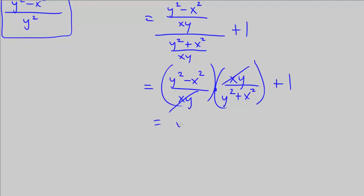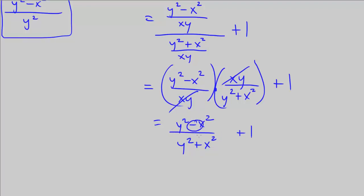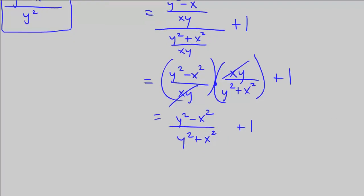And we are left with y squared minus x squared over y squared plus x squared, plus 1. Don't think we can cancel the y squared or x squared terms — we cannot, because these are not being multiplied; they are being added. We have to consider this as a whole binomial in the denominator.